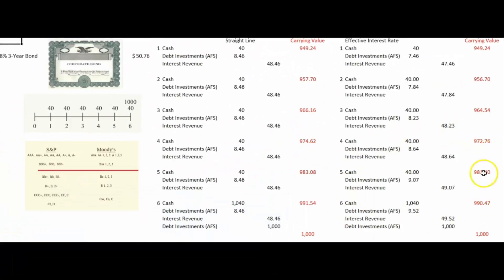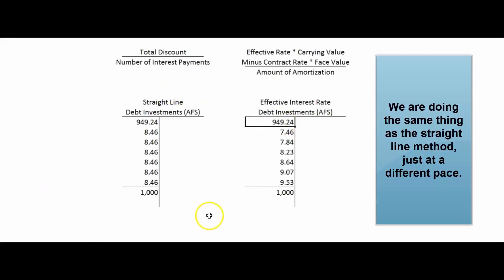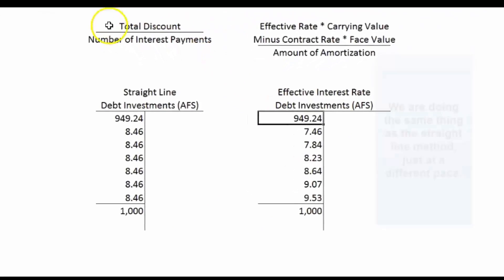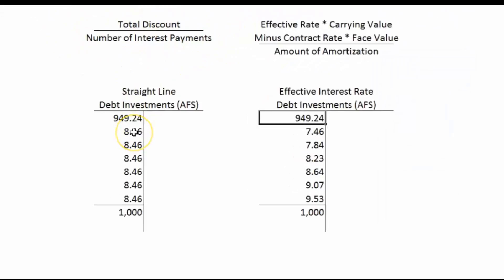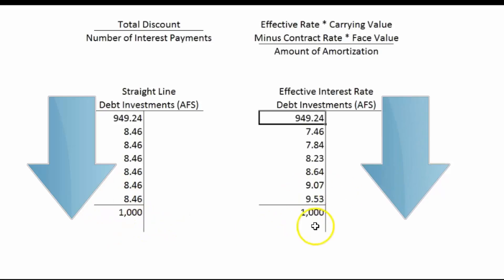We keep doing that pattern all the way through and we end up at a $1,000 face value with a $1,000 carrying value. If you like T-accounts — and who doesn't love T-accounts — we do the same thing as in the straight-line method, just at a different pace: $949.24 plus the amortization of the discount gets us to $1,000. The difference between the two methods: straight-line takes the total discount, divides by the number of interest payments, and debits debt investments that amount each period. The effective interest rate method takes the effective rate times the carrying value, subtracts the contract rate times the face value (which is your cash payment), and that gives you the amortization. Both methods get you from the original discounted amount up to face value.